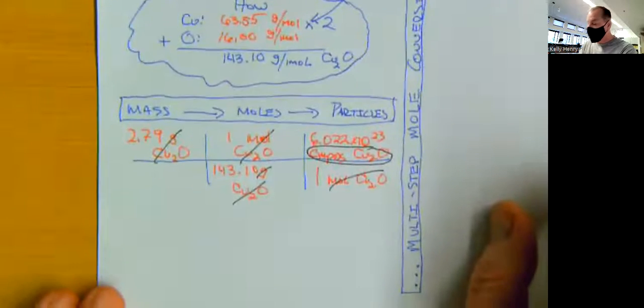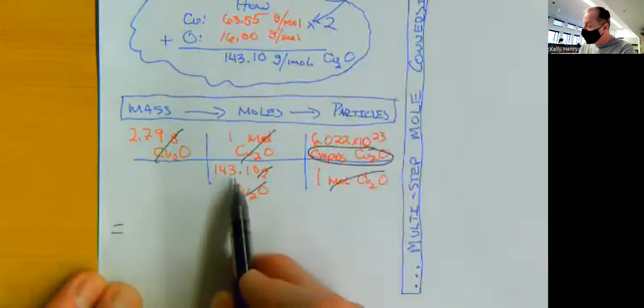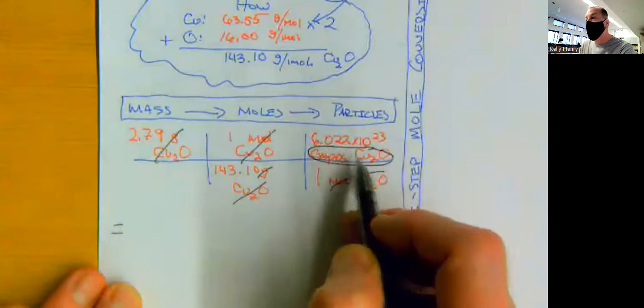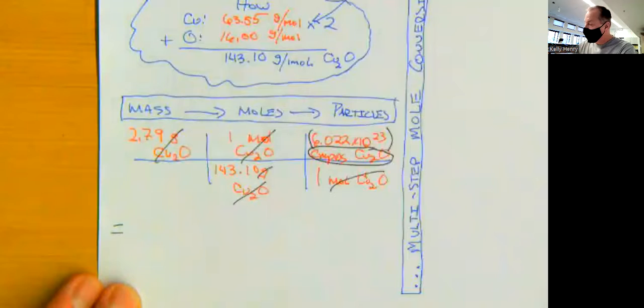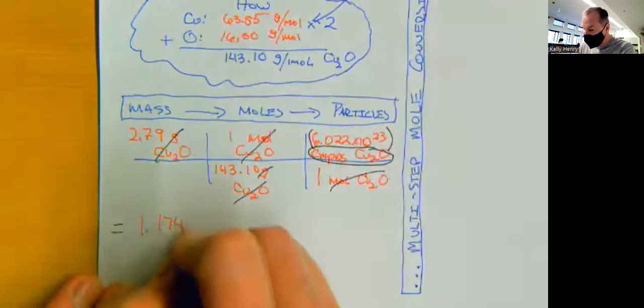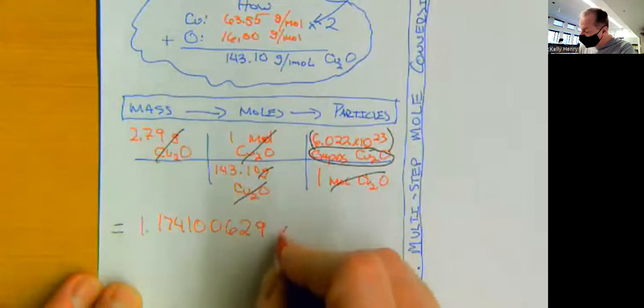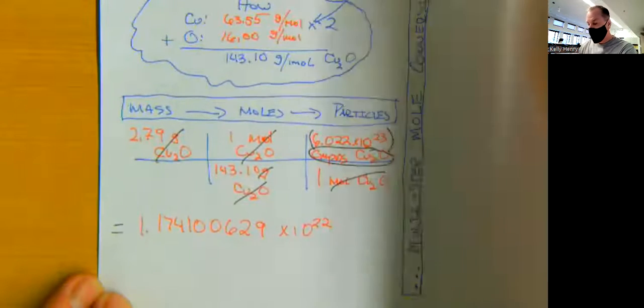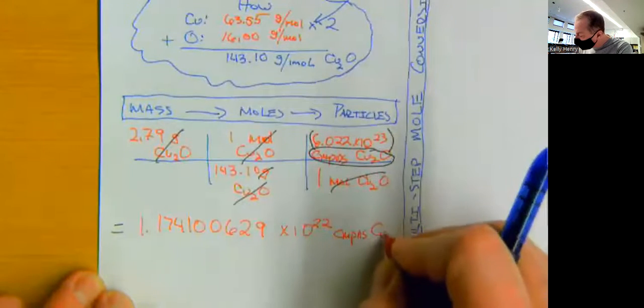So what is our answer here? Well, if we run that through our calculator, if we take 2.79 divided by 143.10, and then multiply that by 6.022 times 10 to the 23rd. And again, I recommend using parentheses around the scientific notation. That gives us an answer, a calculator answer of 1.174100629 times 10 to the 22nd, and that's compounds of copper one oxide.